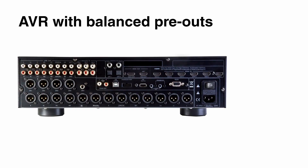This is an example of how these AVRs actually look. On the top right you have all the HDMI inputs for your streaming device or Blu-ray player, and then you can see a bunch of XLR analog pre-outputs.